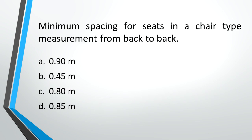Minimum spacing for seats in a chair type measurement from back to back. A: 0.90 meter, B: 0.45 meter, C: 0.80 meter, D: 0.85 meter. Answer: D, 0.85 meter.